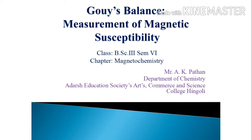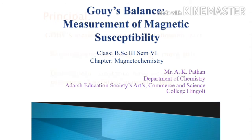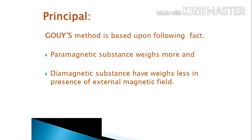This topic is useful for B.Sc third year students, and the chapter is magnetochemistry. Myself A.K. Pathan from Department of Chemistry, Adarsh Education Society's Arts, Commerce and Science College, Hingoli. The magnetic susceptibility of a substance can be measured by means of Gouy balance.